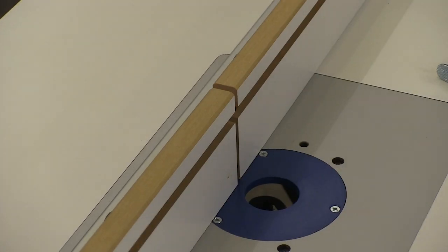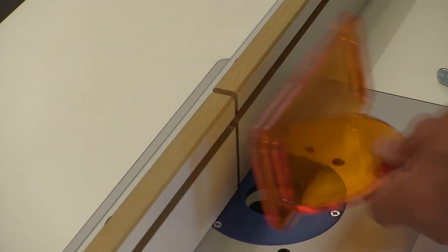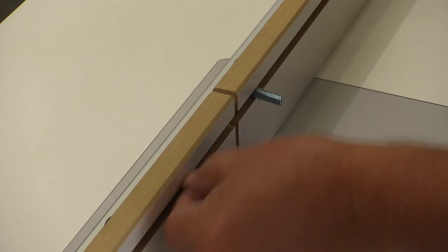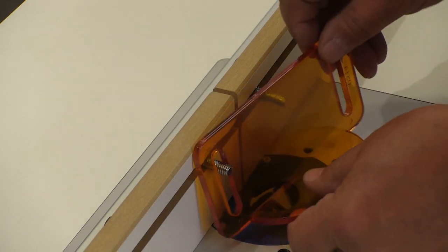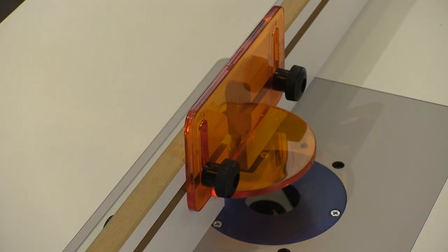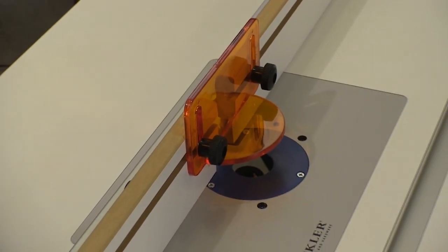Also using finger operated knobs, we can install the guard on the front of the fence. You can adjust the height of the guard easily to best fit the bit and wood being used. Just be sure that you snug this down before starting the router. That completes the basic router table kit itself.